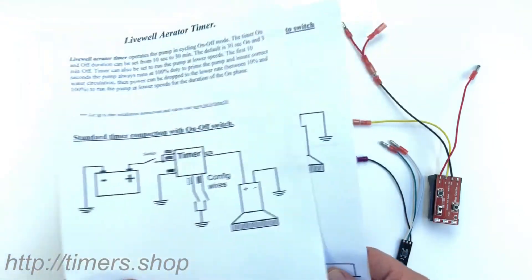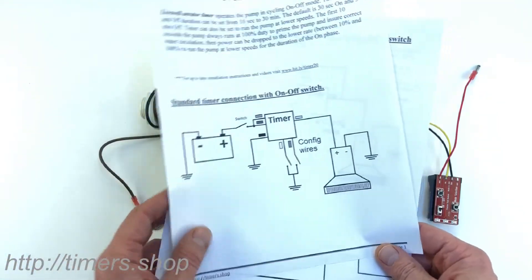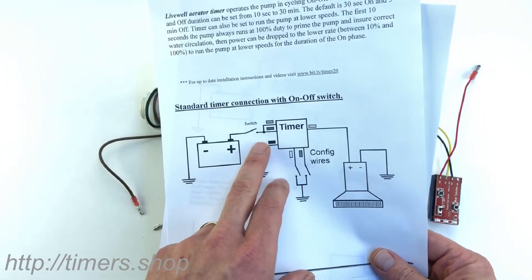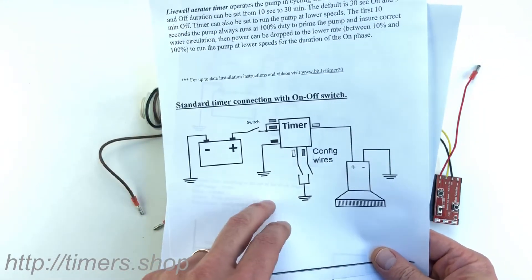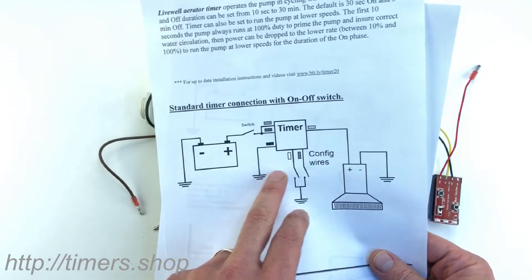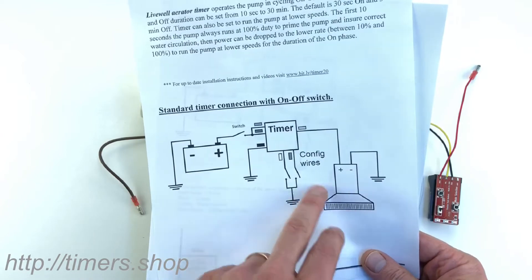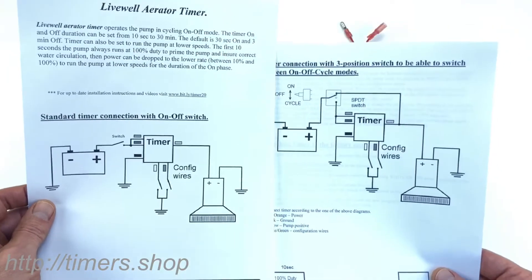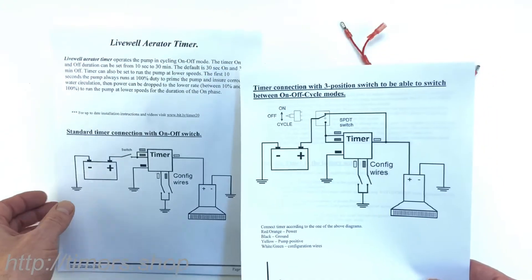Okay, so let me show you how it's connected. Connection is very simple. There are two diagrams. The first one is very simple: red and orange wire supply power to the timer, black is the ground, yellow output goes to the pump, and two configuration wires are the white and the green.